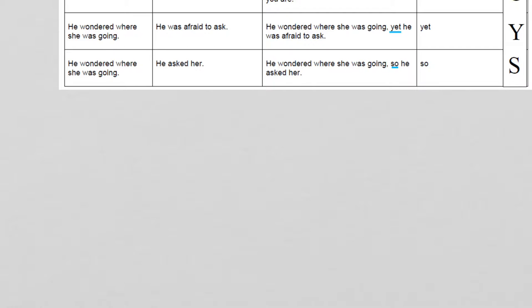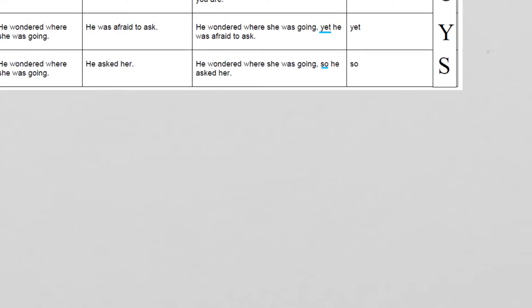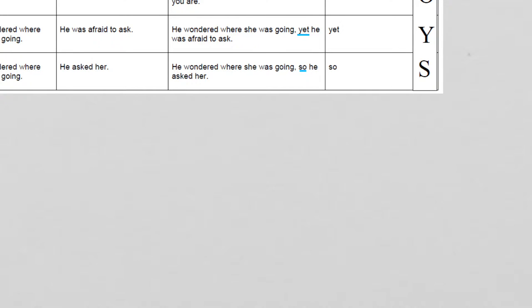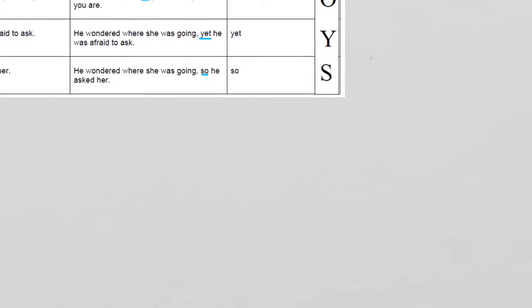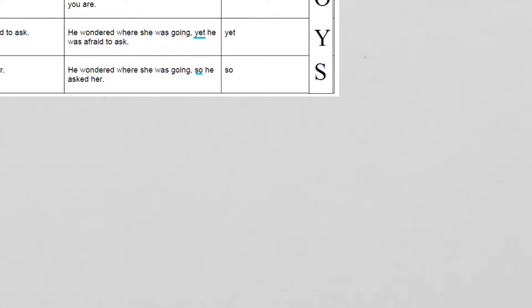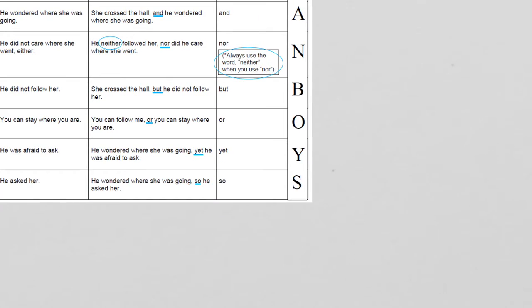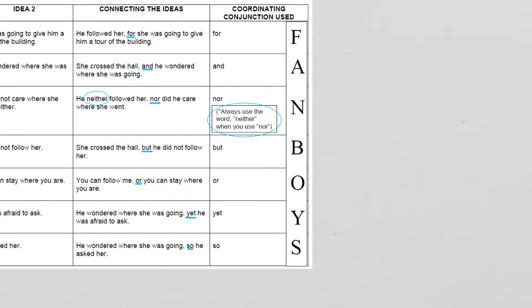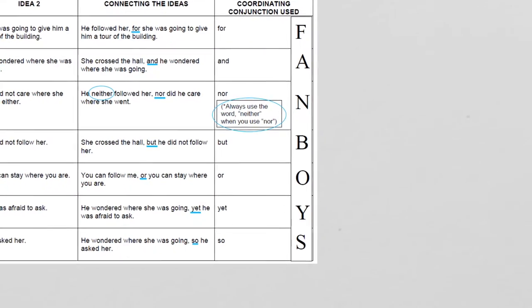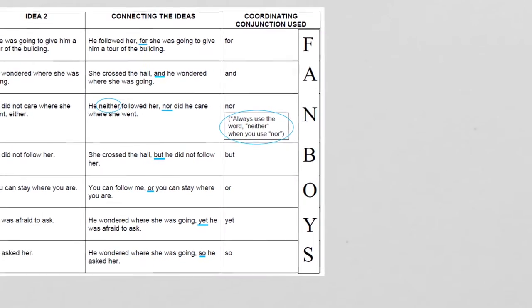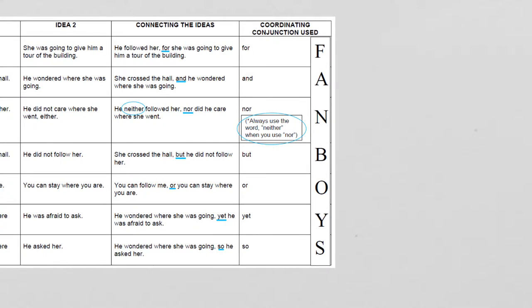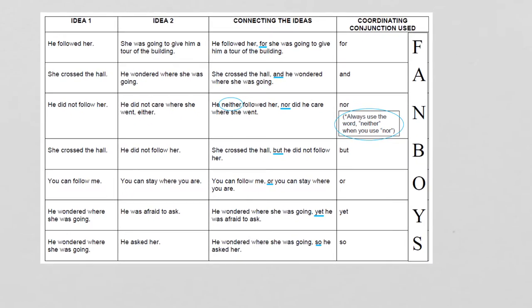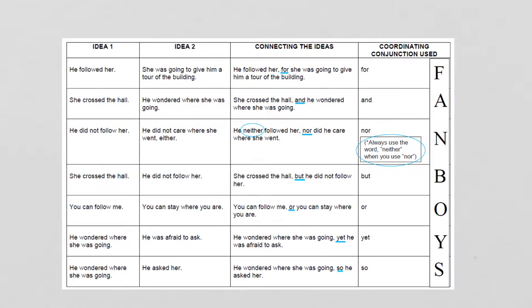Last example here: 'He wondered where she was going' and 'He asked her' become 'He wondered where she was going, so he asked her.' 'So' is pretty common too. If you can remember 'and' and 'but,' those are two good coordinating conjunctions to start with — you can make a lot of sentences with just those two.